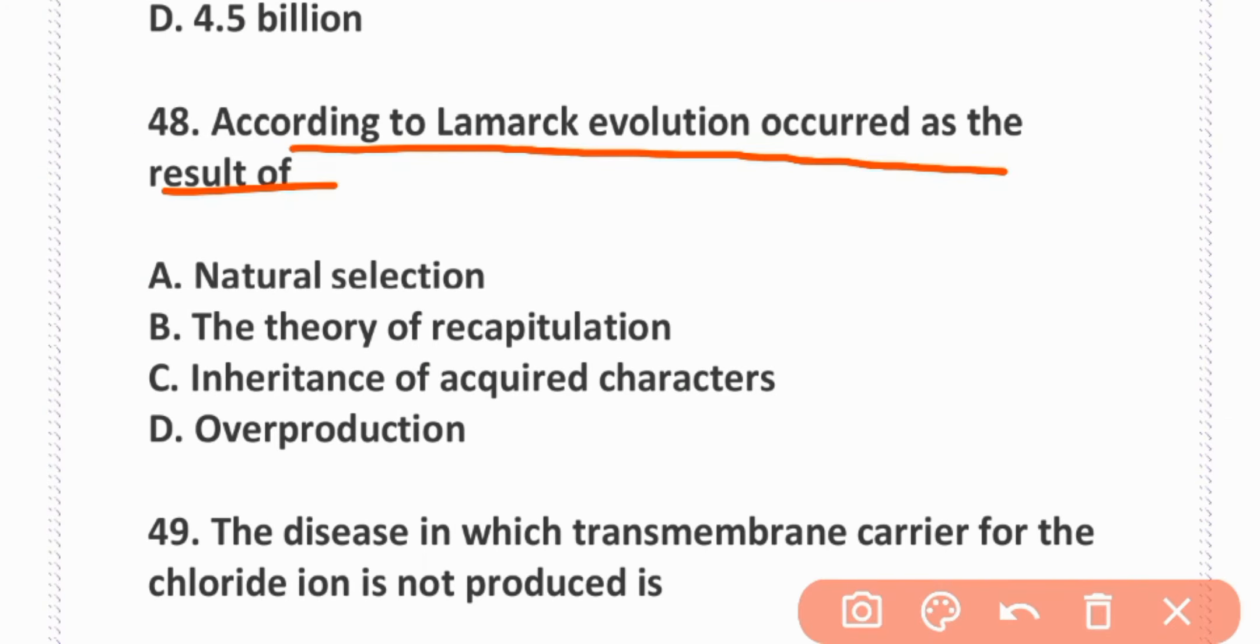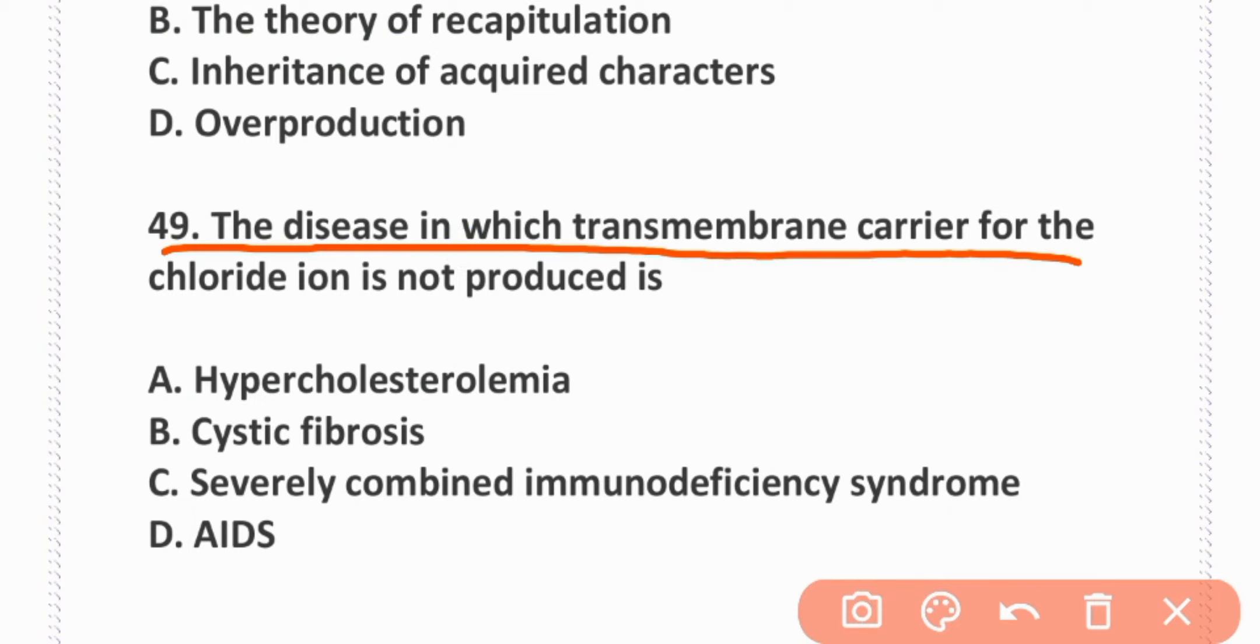According to Lamarck, evolution occurs as a result of inheritance of acquired characters. The disease in which transmembrane carrier for the chloride ion is not produced is cystic fibrosis. Option B is correct.